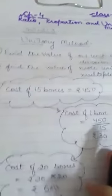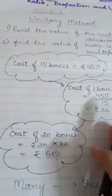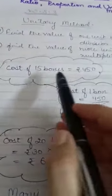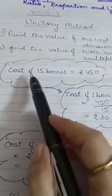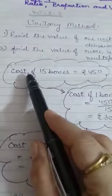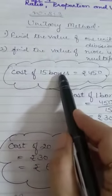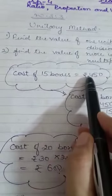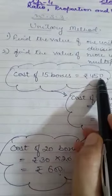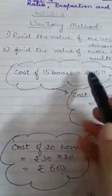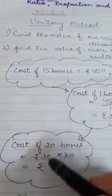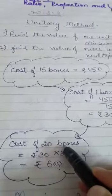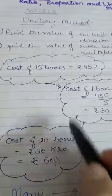Let us see an example. We are given the cost of 15 boxes, which is equal to Rs. 450, and we have to calculate the cost of 20 boxes. So what is the procedure for that?